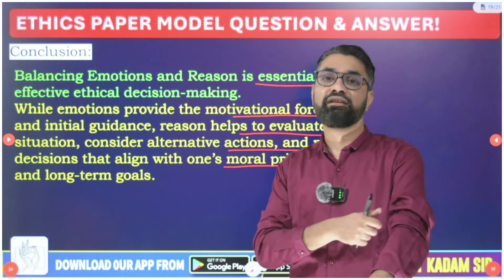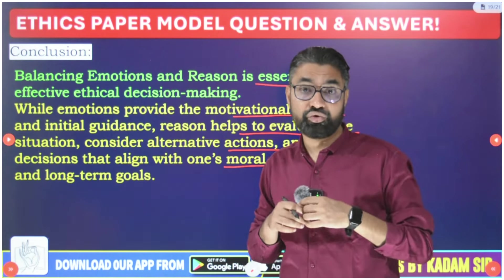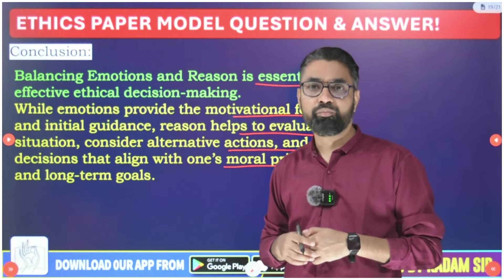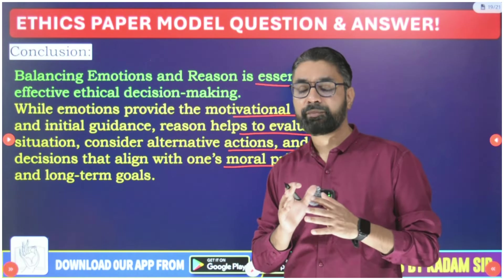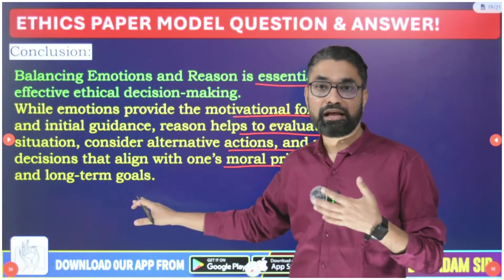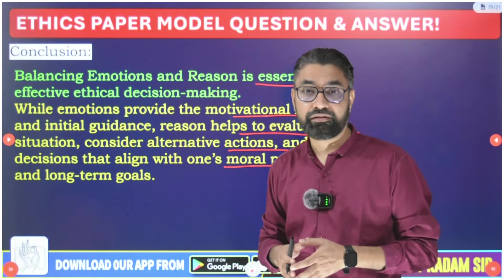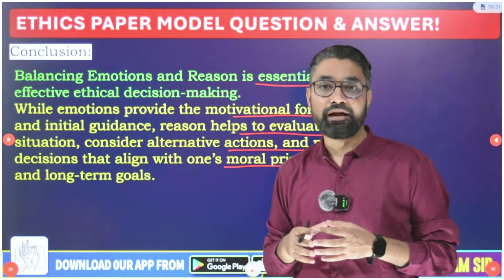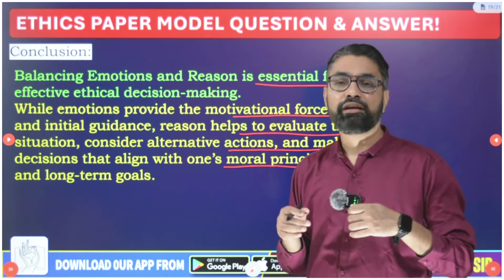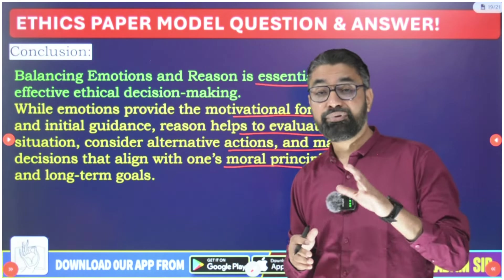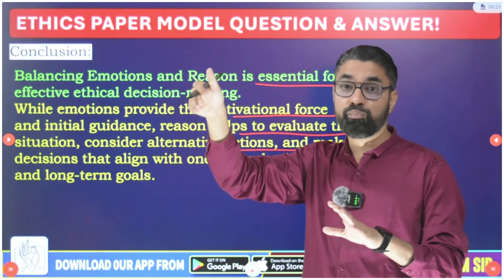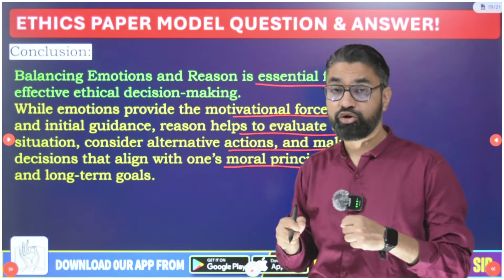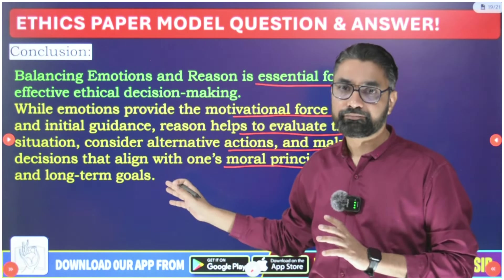Another conclusion approach: EQ can act as initial guidance and motivator, but it should be mixed with reason. Reason helps to evaluate situations, consider alternative actions, and make decisions aligned with one's moral principles and long-term goals. For example, when removing illegal encroachment, emotional cues alone may say don't remove it because of the vulnerable people living there, but emotions plus reasoning will tell you what is more sustainable long-term — as a civil servant you cannot support illegal activity even when compassionate, since the risks of disaster may cause even more harm.